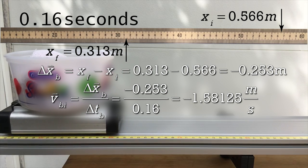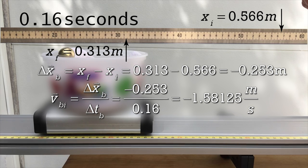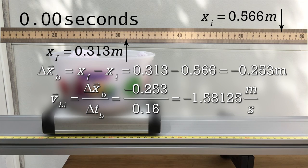Therefore, the velocity of the ball before the collision is negative 1.58125 meters per second. Note that this is the velocity of the ball in the x direction because we are going to use conservation of momentum to predict the velocity of the cart and ball after the collision, which will all be in the x direction.